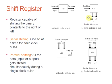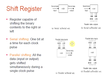In Serial In Parallel Out, data is input as a single bit of information whereas all output is taken at a time — this is called SIPO. The third type is Parallel In Serial Out (PISO), where input is given all at once but output is taken one bit at a time. The fourth type is Parallel In Parallel Out (PIPO), where data is both input and output in parallel, and all data gets shifted simultaneously for a single clock pulse.